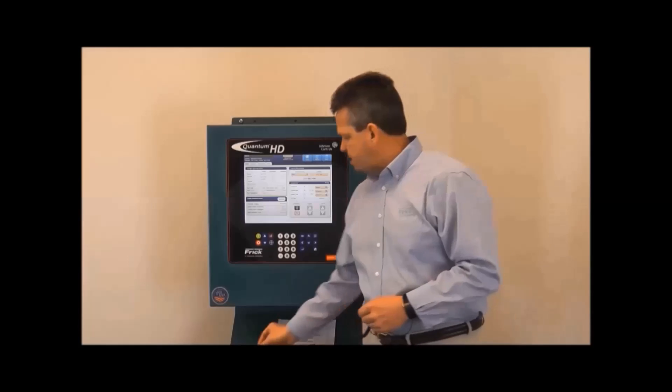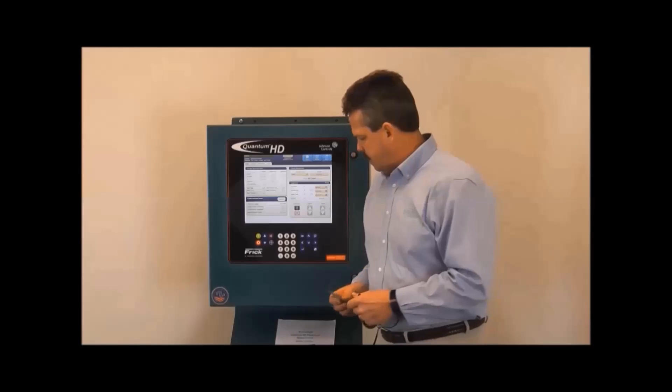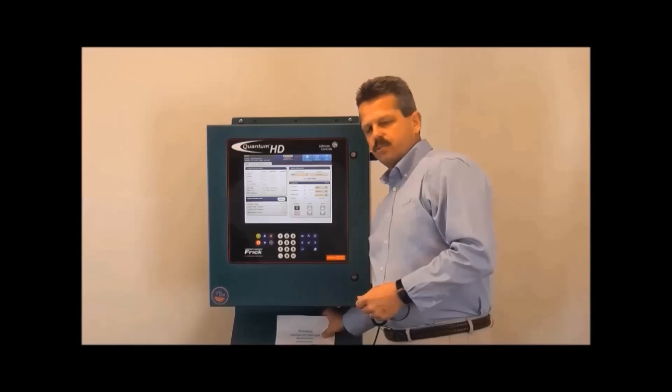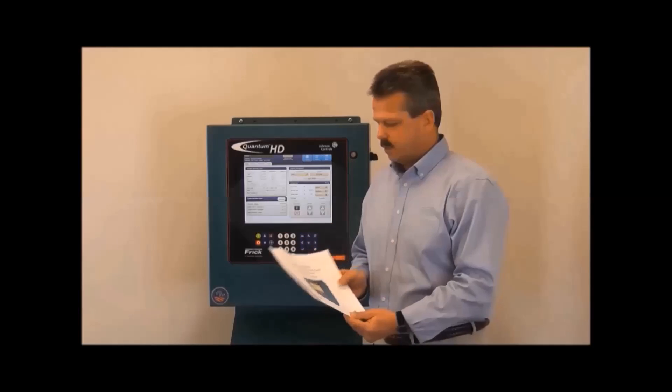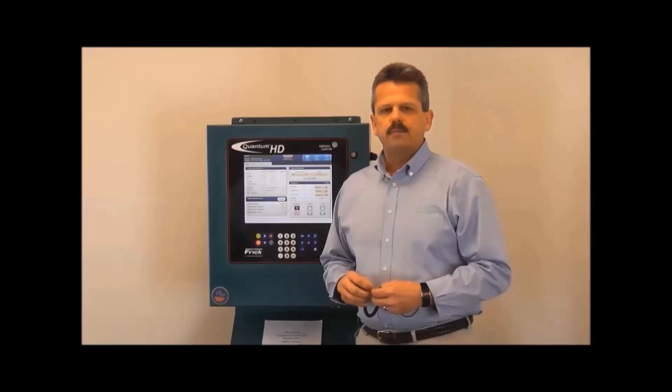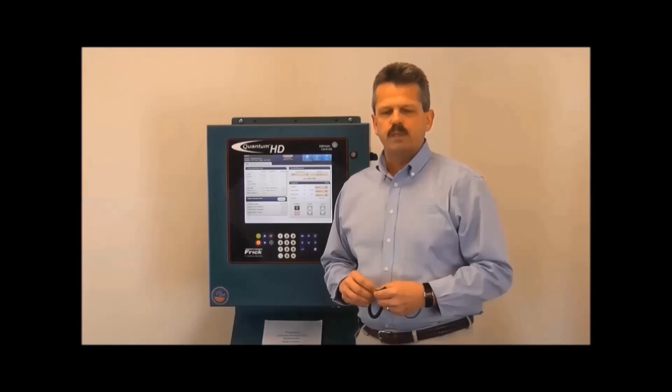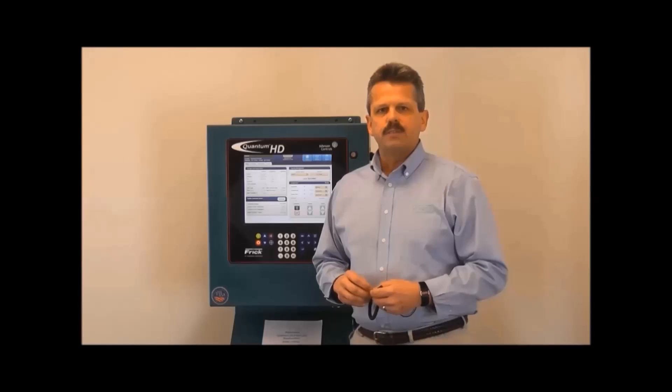If you do change the operating software flash card, you will receive a flash card in a static proof bag along with a written set of instructions that tells you exactly how to step-by-step effect the change of the flash card. The first step in which to save the setpoints to a USB thumb drive would be to open the controller door, which we will go ahead and do at this time.